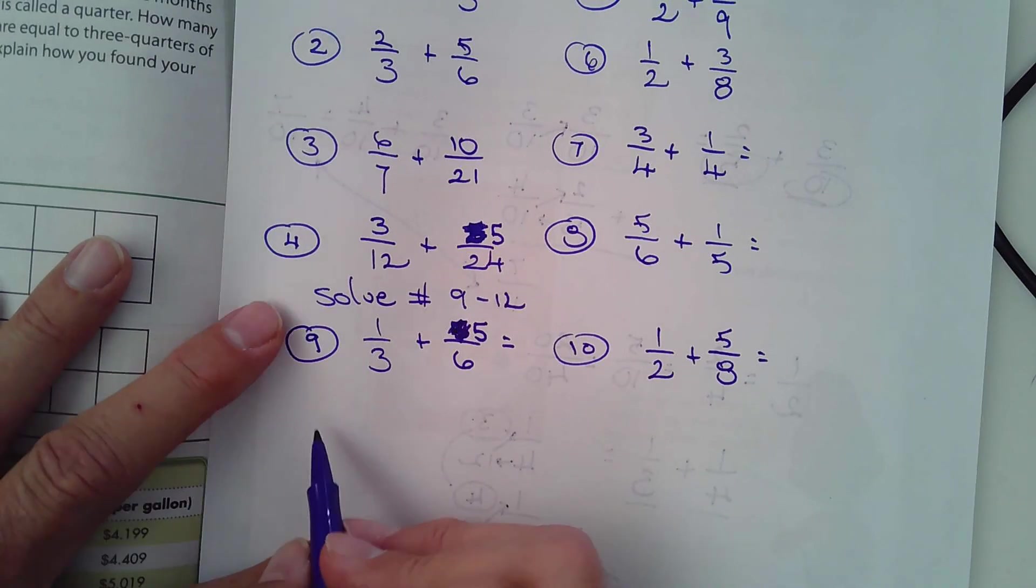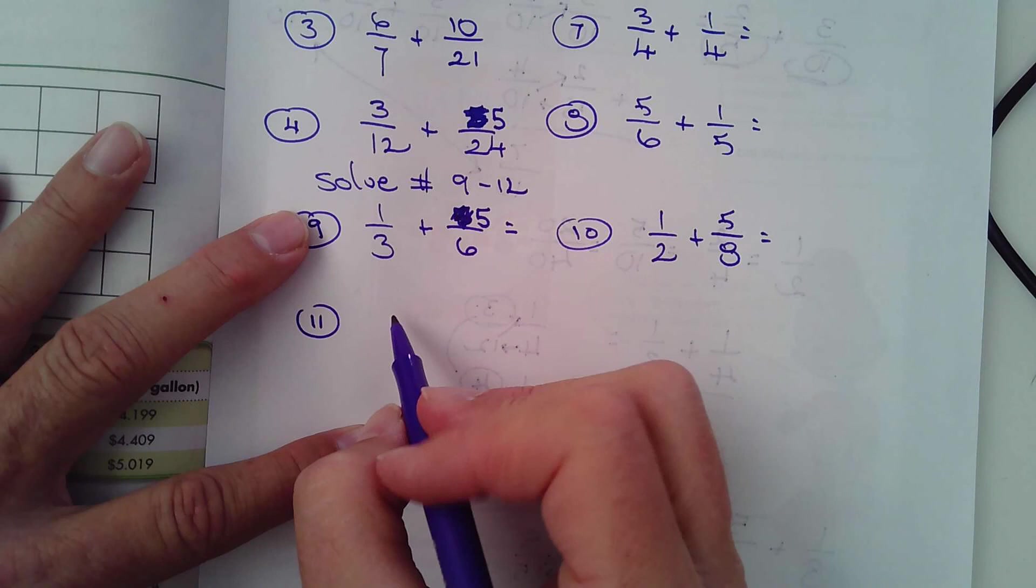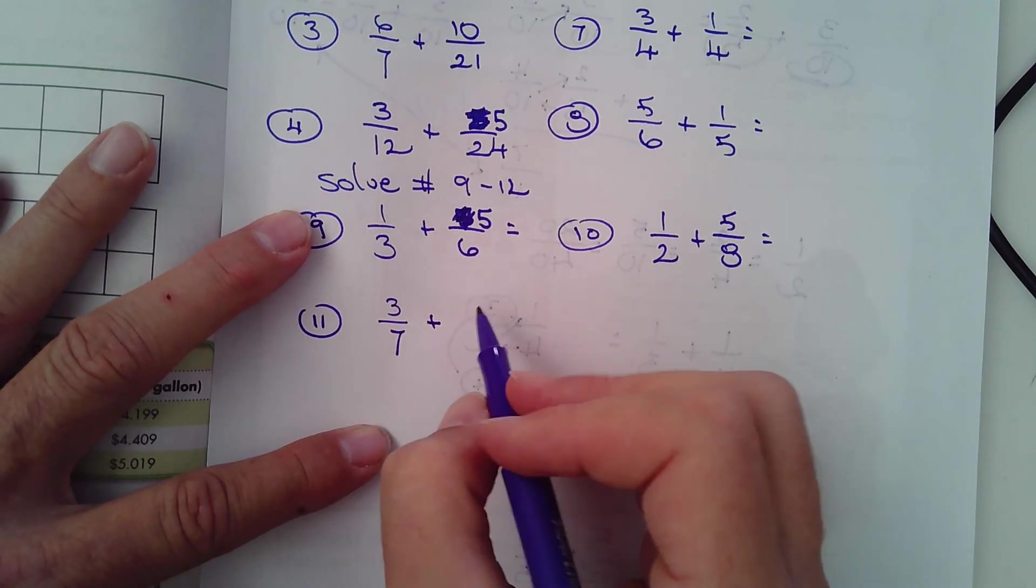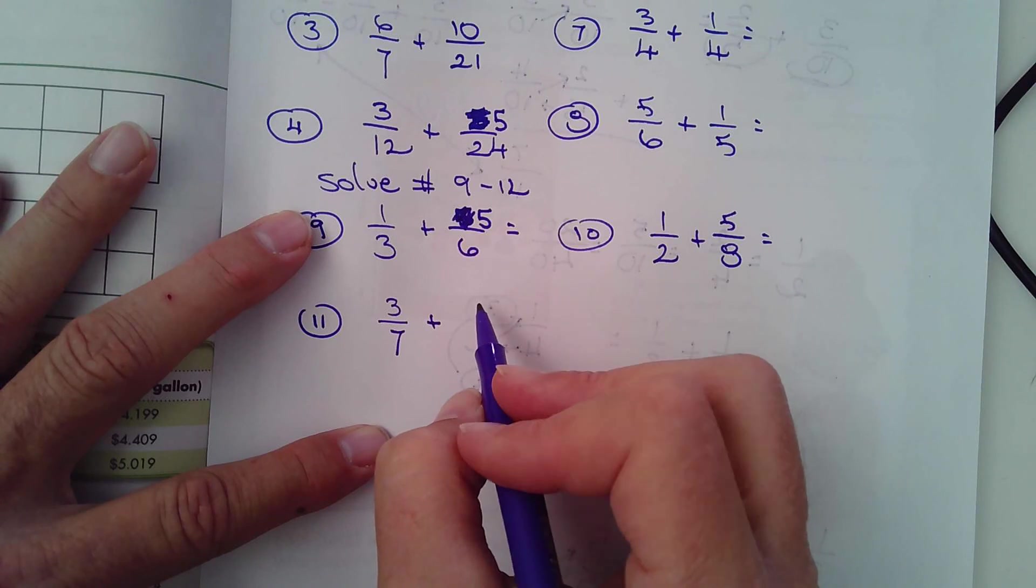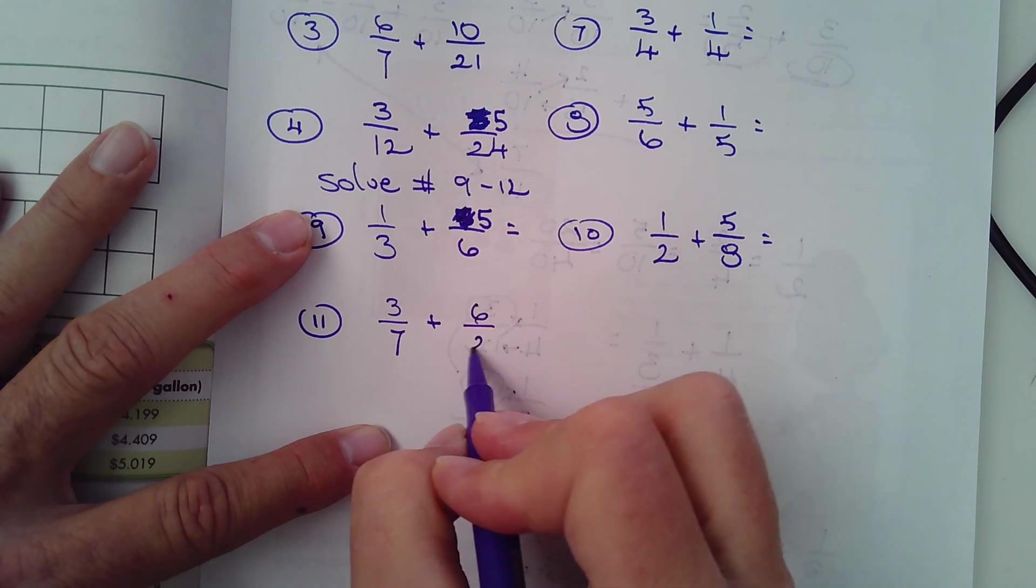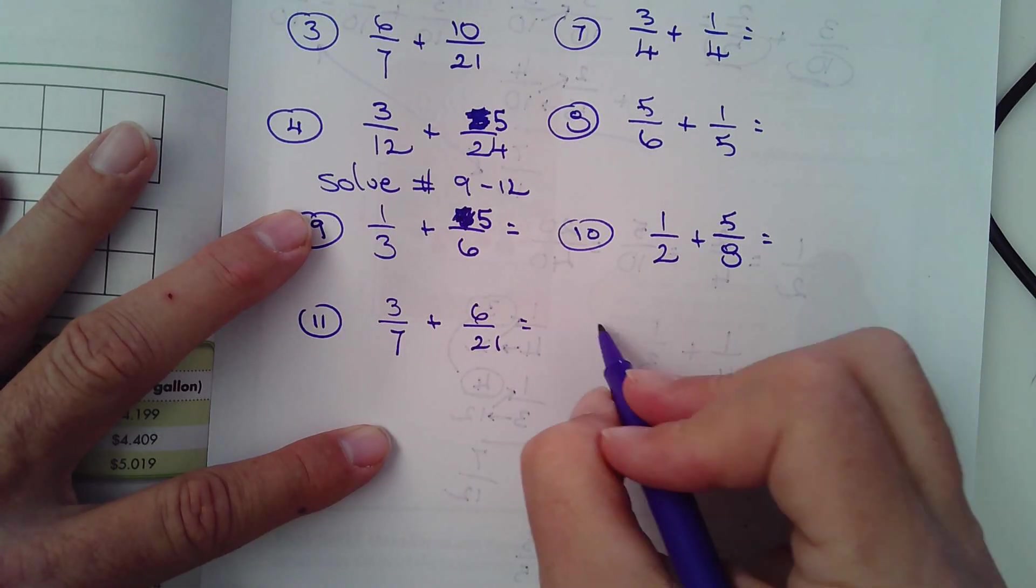Number 11, I don't want to make, I'm going to finish this here pretty quick here. How about 3/7 plus 6/21. And then finally, number 12, the last one.